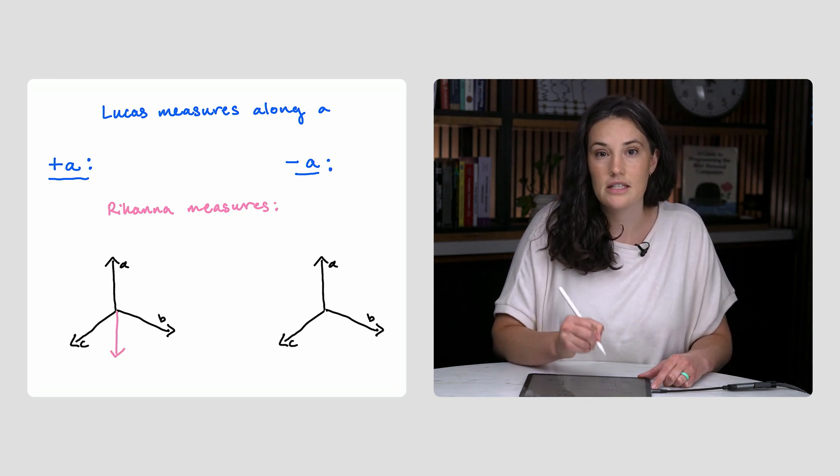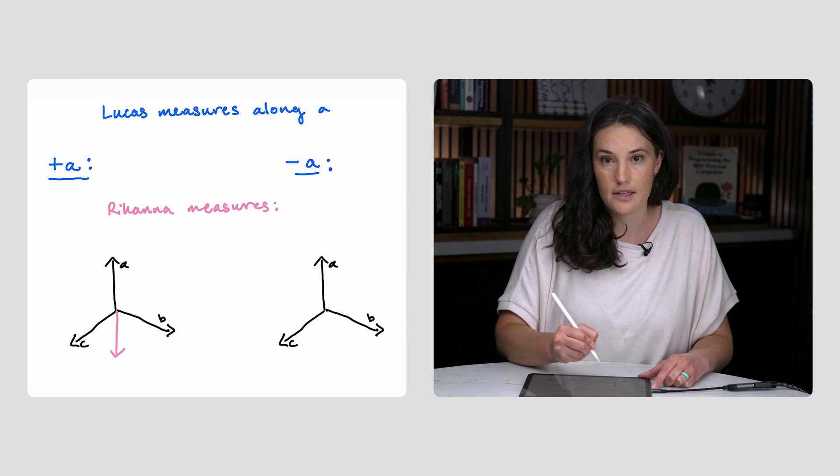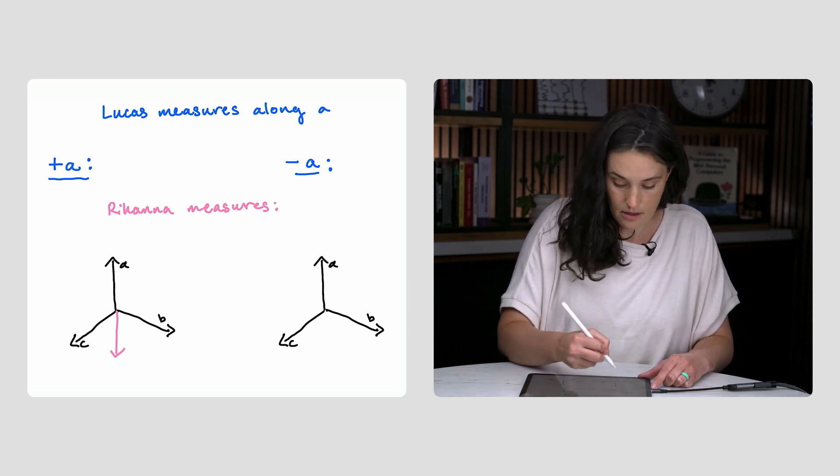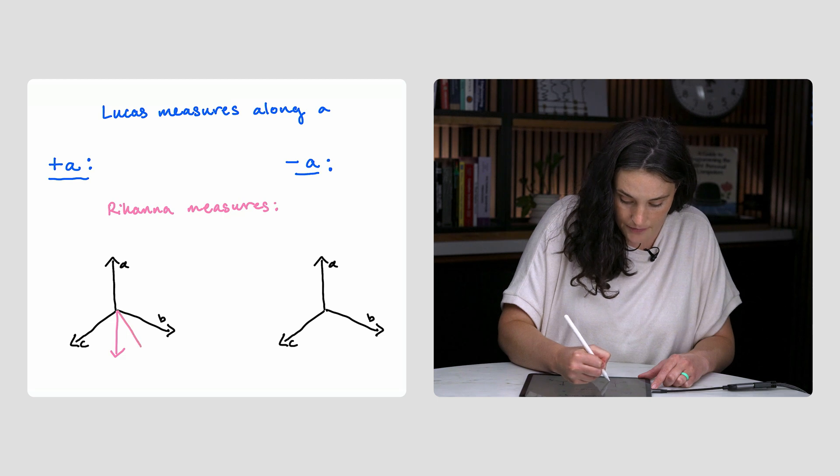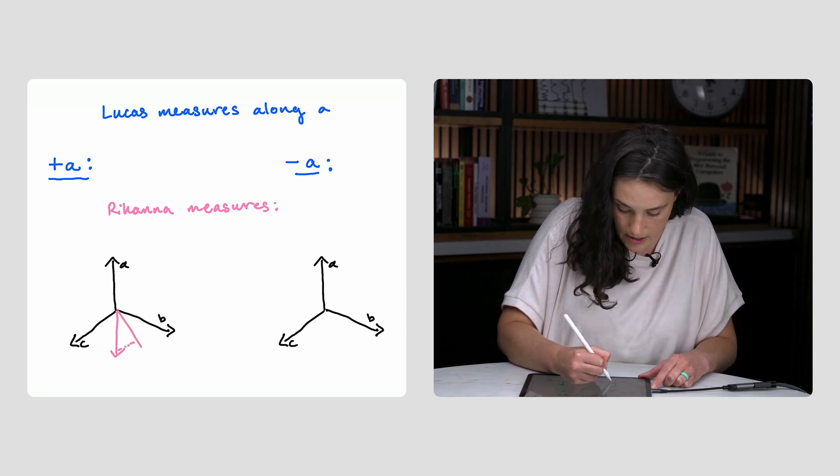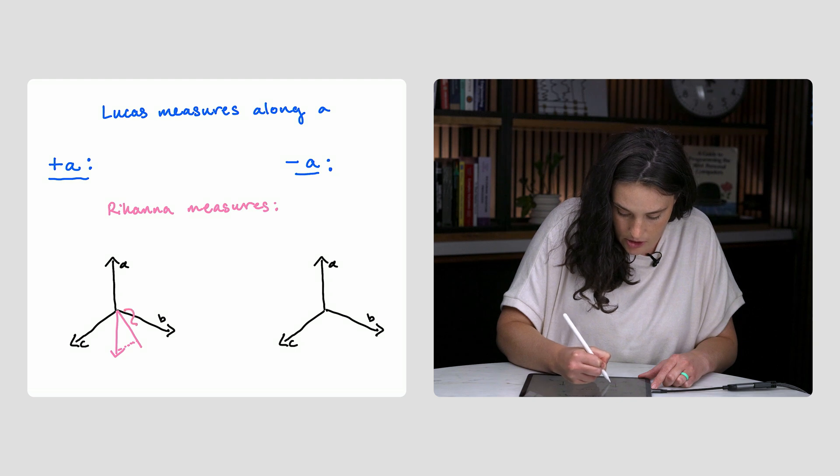In this case, the angles between this vector and the other two measurement axes, B and C, are both 60 degrees. So one half of that is 30 degrees, and cosine of 30 is shown here.